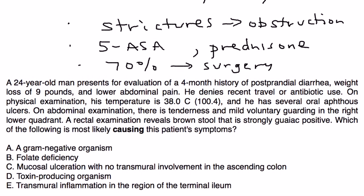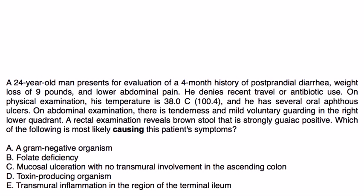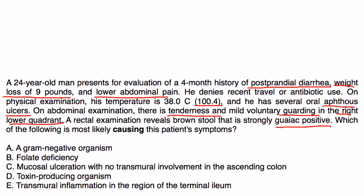Clinical vignette one: A 24-year-old man presents for evaluation of a four-month history of postprandial diarrhea, weight loss of nine pounds, and lower abdominal pain. He denies recent travel or antibiotic use. On physical exam, temperature is about 100°F, and he has several oral aphthous ulcers. Abdominal exam shows tenderness with mild voluntary guarding in the right lower quadrant.